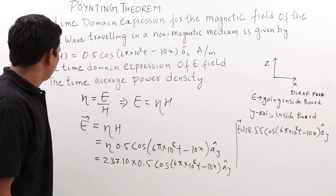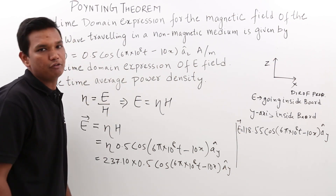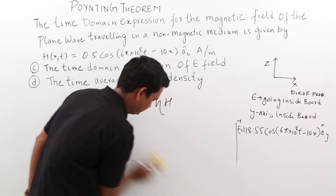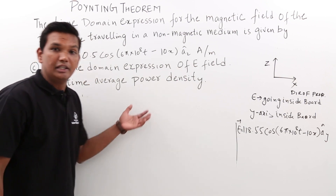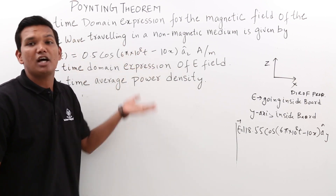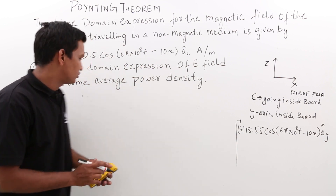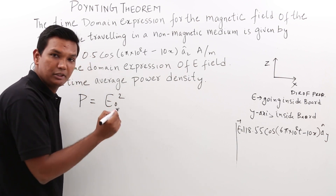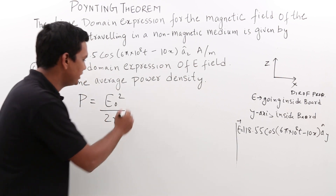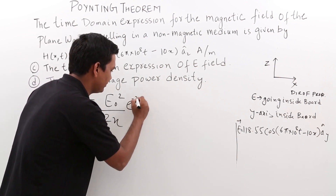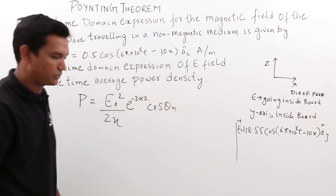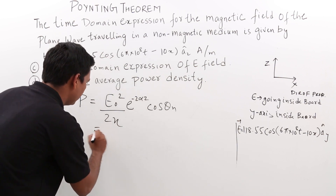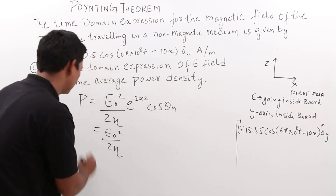Now we need to find the time average power density. From the previous video, we concluded this is a lossless medium because alpha equals 0. For a lossless medium, the time average power density is E₀² / (2η). Since alpha is 0, e^(−2αz) = 1, and cos(θ_η) = cos(0) = 1, so the power simplifies to E₀² / (2η).